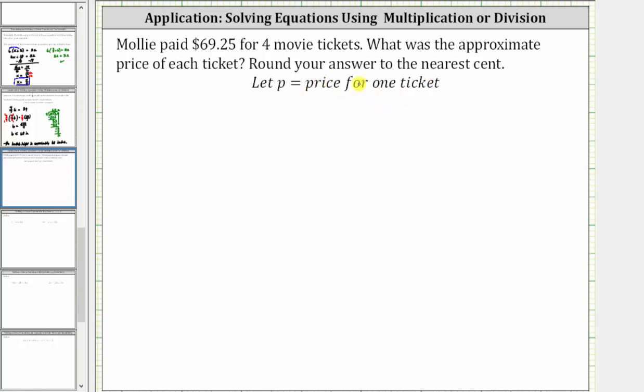Let's let the variable p equal the price for one ticket. So if Molly bought four tickets for $69.25, the equation is four times p equals $69.25, or 4p equals $69.25.